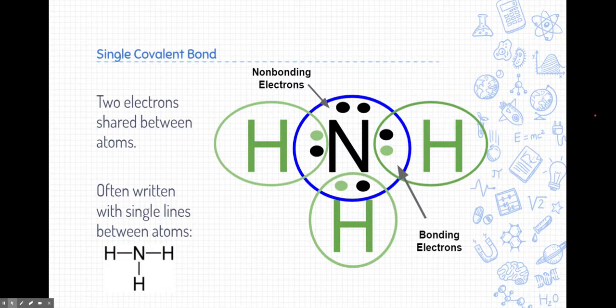Now here's an example of what we would call a single covalent bond. You can see here nitrogen is sharing a couple of electrons with hydrogen. Well, whenever we have two electrons shared between two different elements, we call that a single bond. And a lot of times they're written as single lines between atoms when we draw their molecular formulas and shapes.